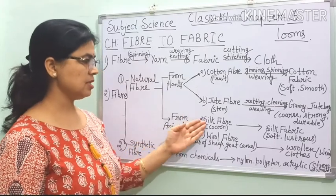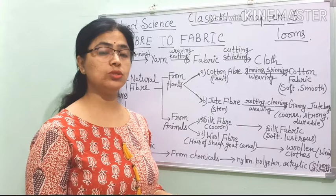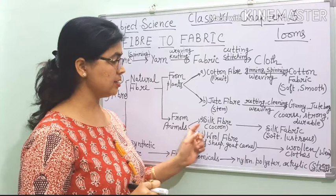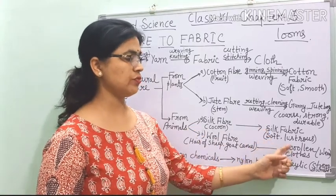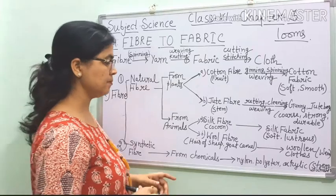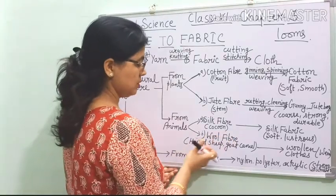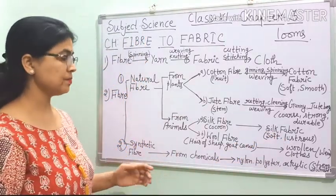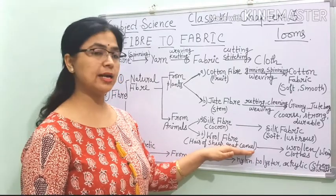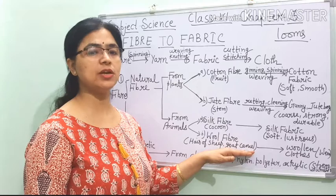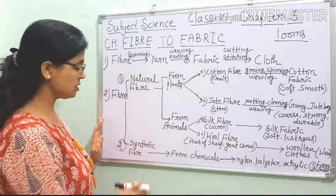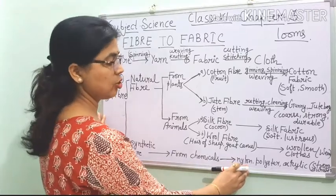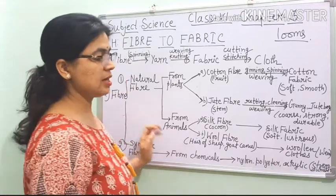From the animals — silk fibre comes from the cocoon stage of the silk moth life cycle. Silk fabric is soft and lustrous. Wool fibre comes from the hair of sheep, goat, and camel, giving us woolen clothes. The special process for wool will be studied in 7th class. Synthetic fibre comes from chemicals — nylon, polyester, and acrylic — and these are strong.